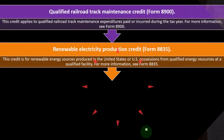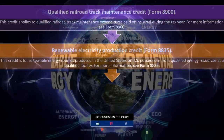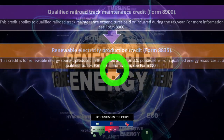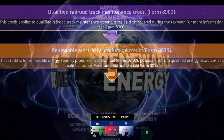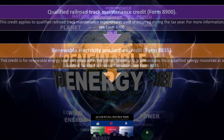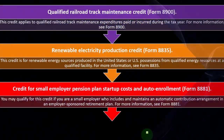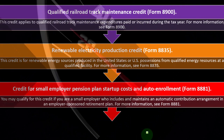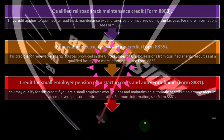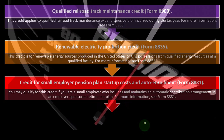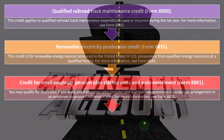The Renewable Electricity Production Credit is on Form 8835. This credit is for renewable energy sources produced in the United States or U.S. possessions from qualified energy resources at qualified facilities. The Credit for Small Employer Pension Plan Startup Costs and Auto Enrollment is also on Form 8881. You may qualify if you are a small employer who includes and maintains an automatic contribution arrangement in an employer-sponsored retirement plan.